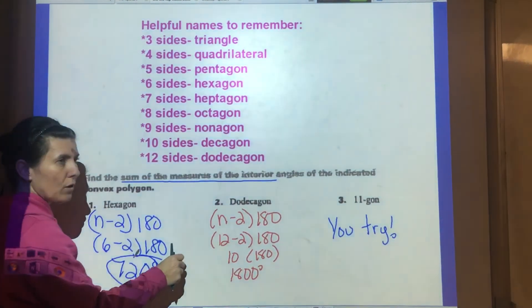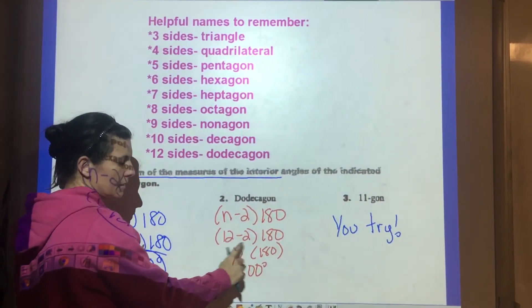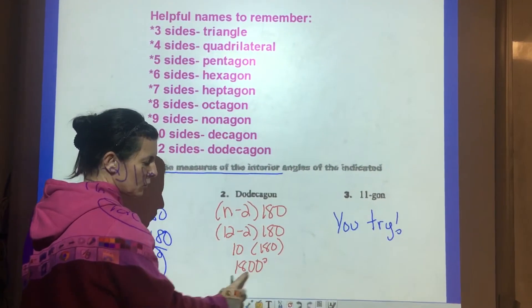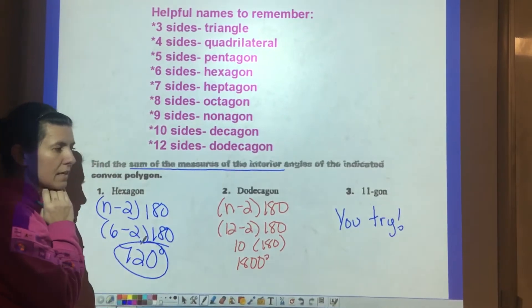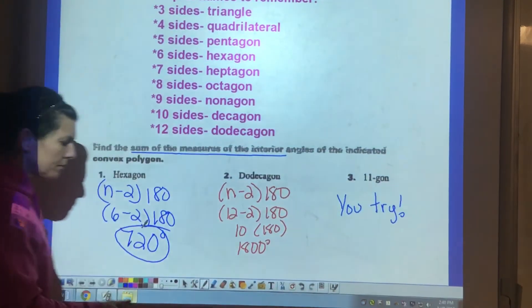Dodecagon, this figure has 12 sides. 12 minus 2, remember n is the number of sides, 12 minus 2 is 10 times 180, the sum of those measures is 1800. You can either pause the video now and try number three or come back to it.